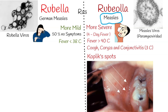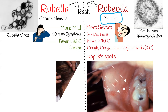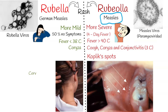Some of these symptoms can also occur in rubella — for example, fever, coryza, and rash. But in the case of rubella, fever is commonly lower than 38 degrees Celsius. Rubella can also have other symptoms like cervical lymphadenopathy, which means enlarged cervical lymph nodes, joint pain in adults, and sometimes ear infection.